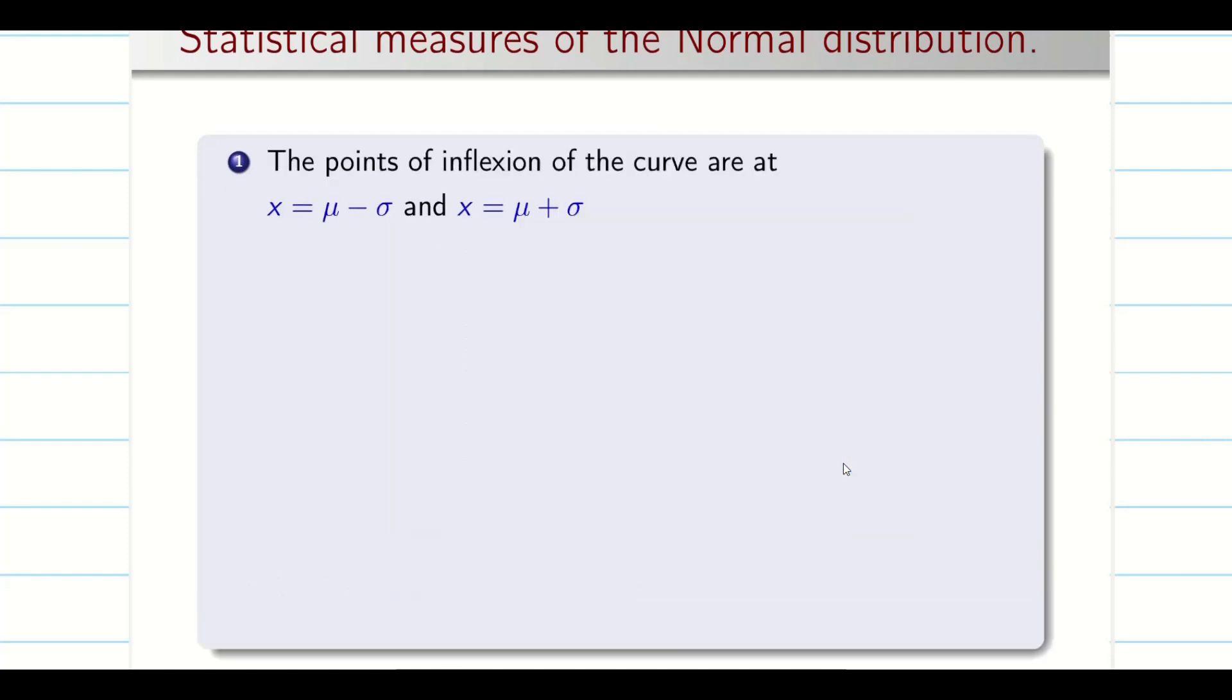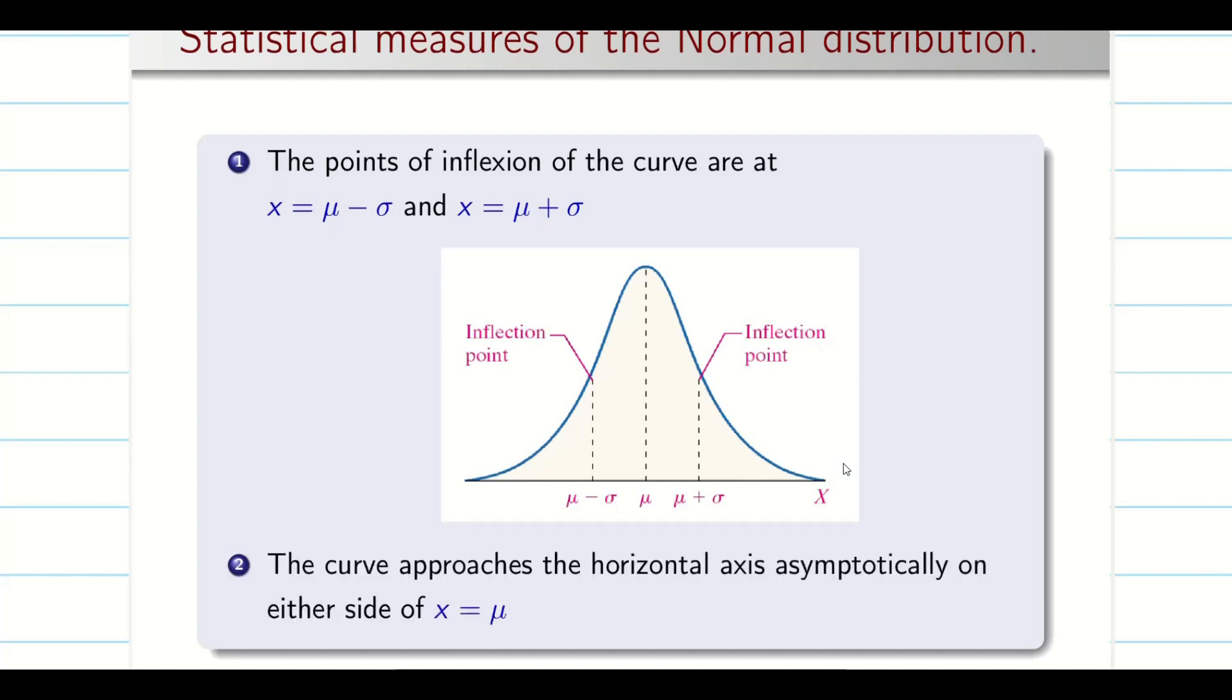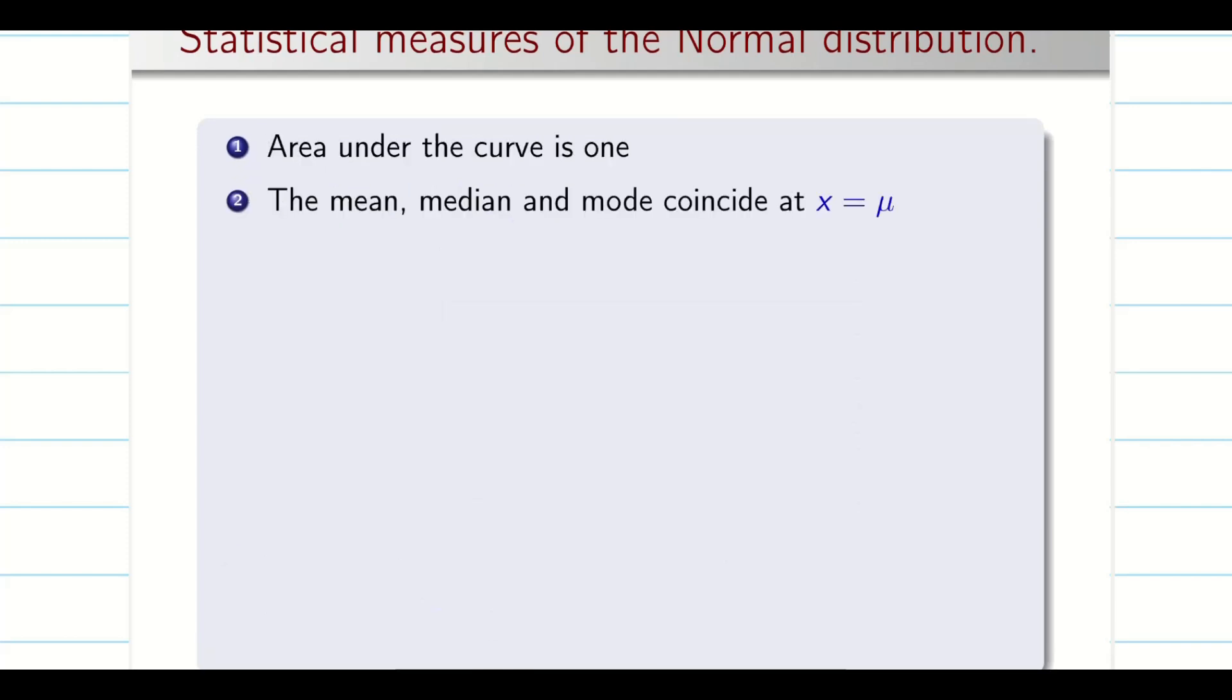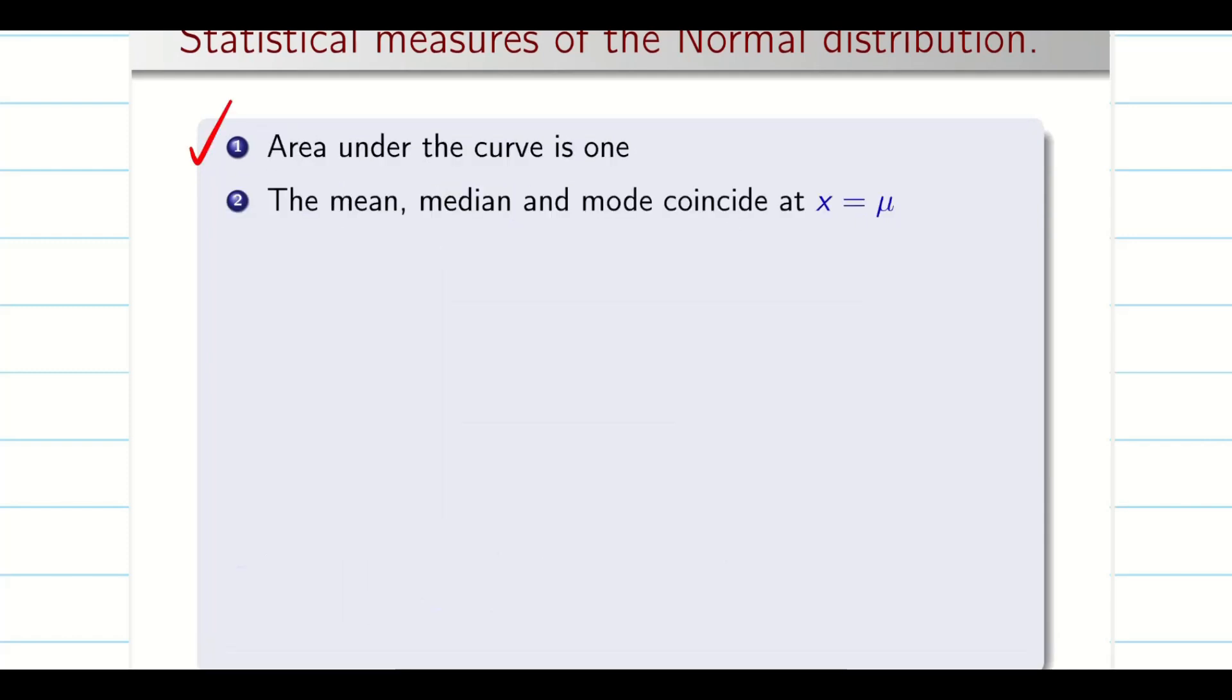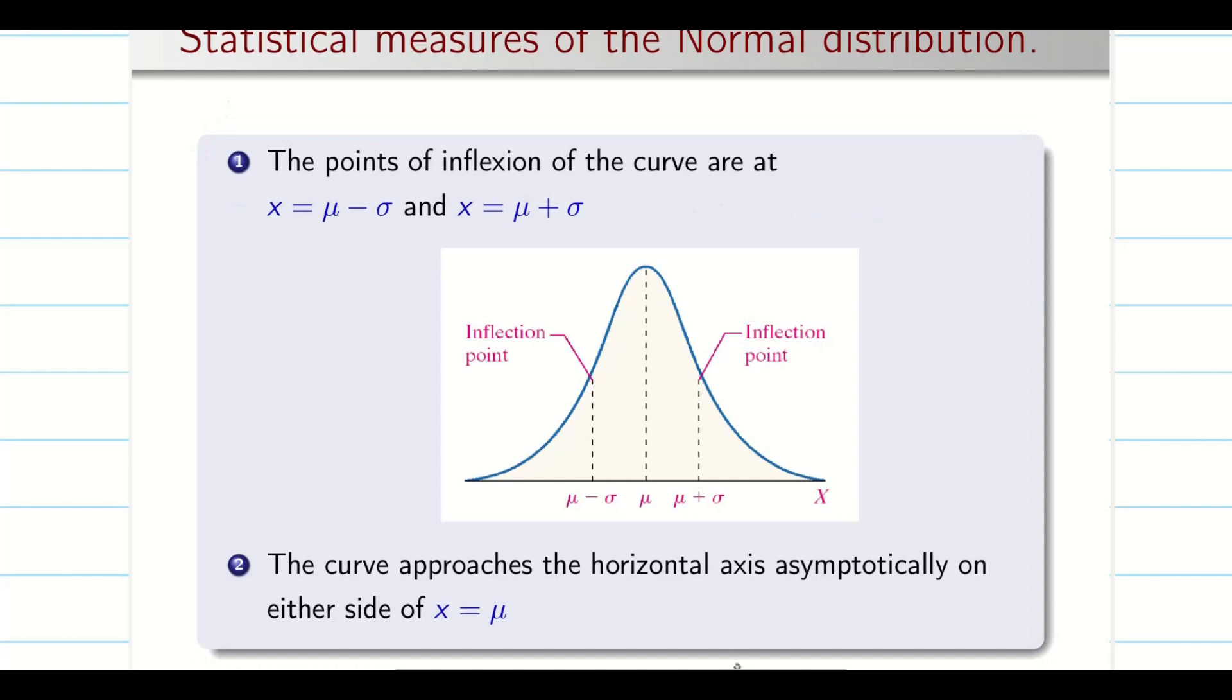These are all some MCQs. The point of inflection is going to be μ minus σ and μ plus σ. And you see, the curve approaches the horizontal axis asymptotically on the either side of the x equal to μ. And this point is very obvious. We say total probability is 1. So, the area of this normal curve is always going to be 1. And the other thing, since it is symmetric about the mean, I can say this area is 0.5 and this area is 0.5 and the total area is 1.